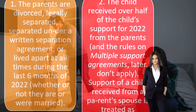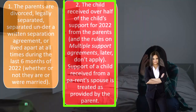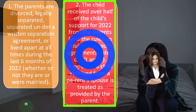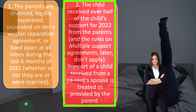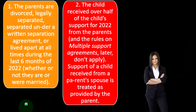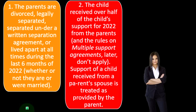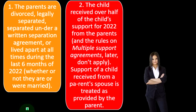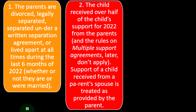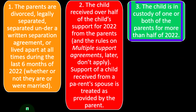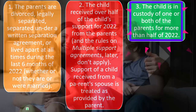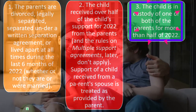Condition two: the child received over half of the child's support for 2022 from the parents, and the rules on multiple support agreements don't apply. Support of a child received from a parent's spouse is treated as provided by the parent. Condition three: the child is in custody of one or both of the parents for more than half of 2022.